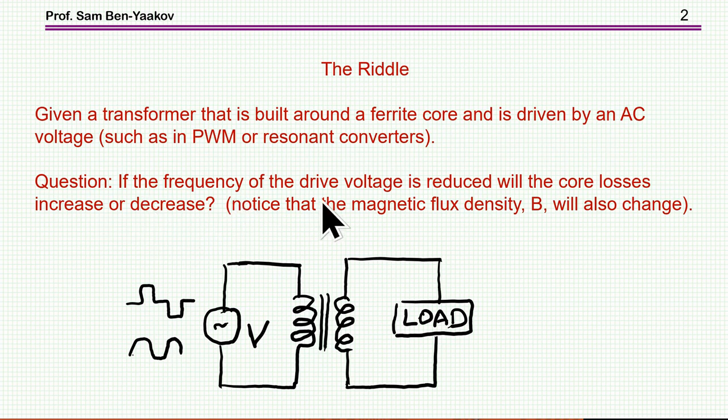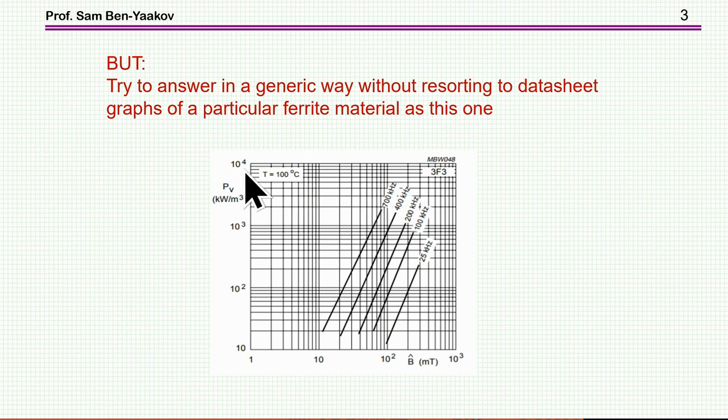And the question is, if the frequency of the drive voltage is reduced, will the core losses increase or decrease? Notice that the magnetic flux density B will also change. That is, when you change the frequency, the magnetic flux density will change. But I asked to try to answer in a generic way without resorting to data sheet graphs like this one. The required answer is really without looking at a specific data sheet of a specific ferrite, but rather to get a general answer.